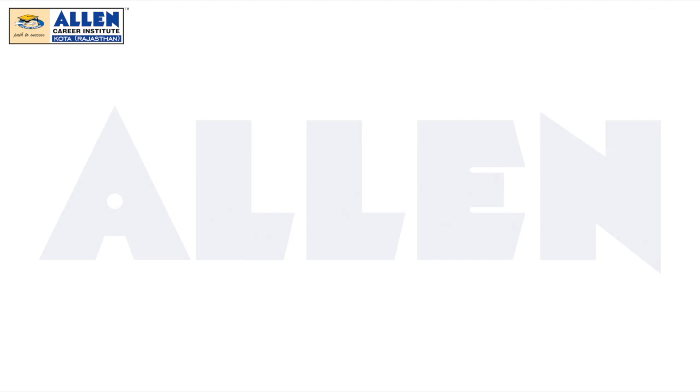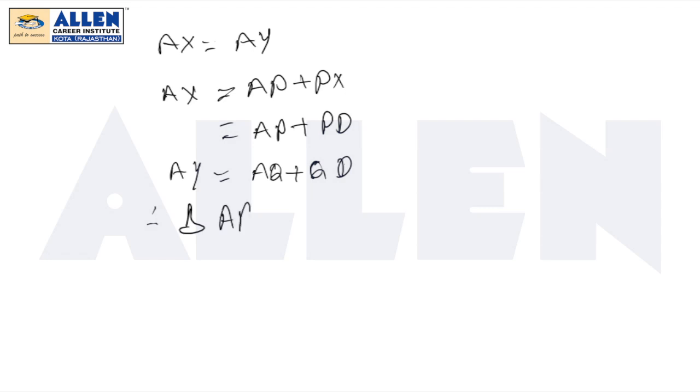In triangle APQ, we know AX equals AY because they are external tangents. AX equals AP plus PX, and PX equals PD. These are also tangents from the external point. Therefore, the triangle's perimeter can be expressed as two times AX.